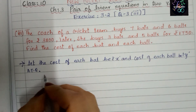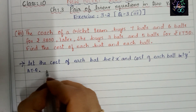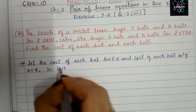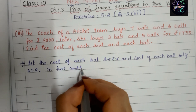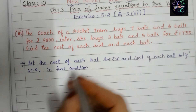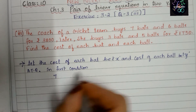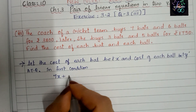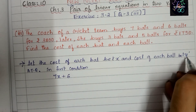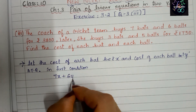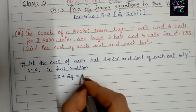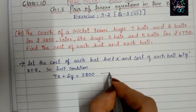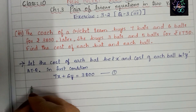In the first condition: seven bats (x) and six balls (y) cost rupees three thousand eight hundred. So our first equation is: 7x + 6y = 3800. This is Equation 1.